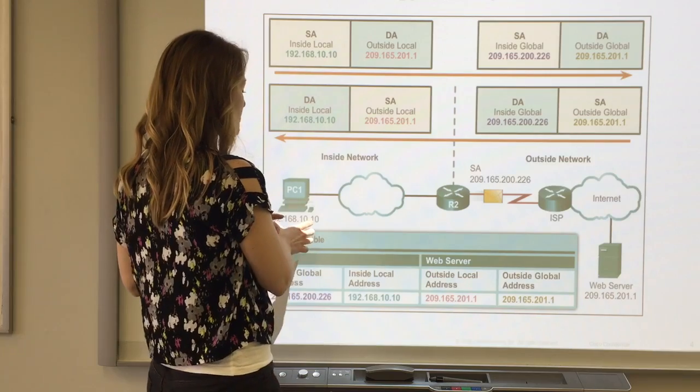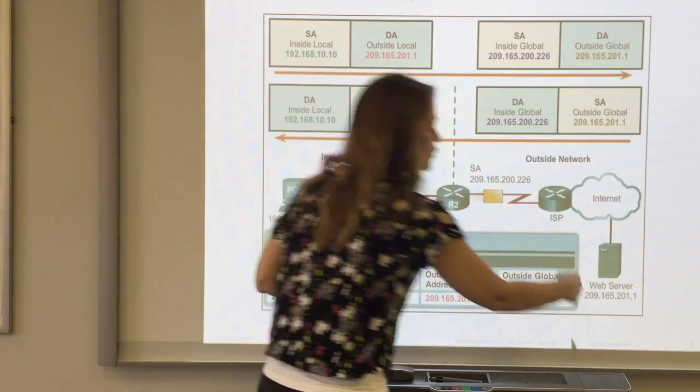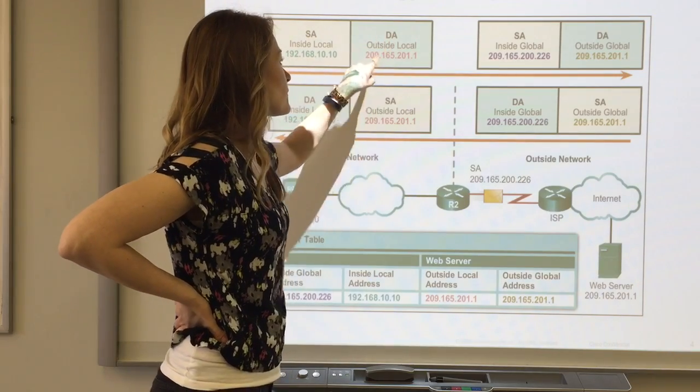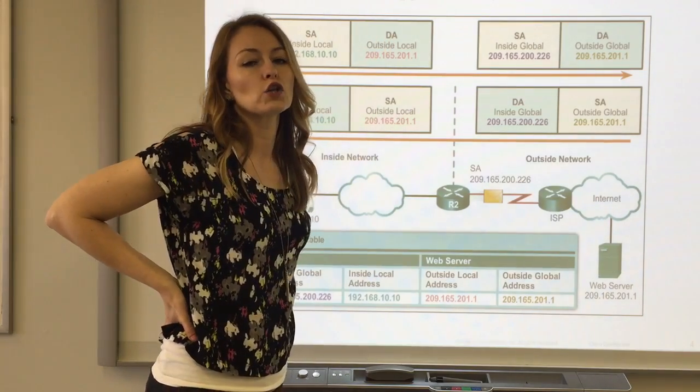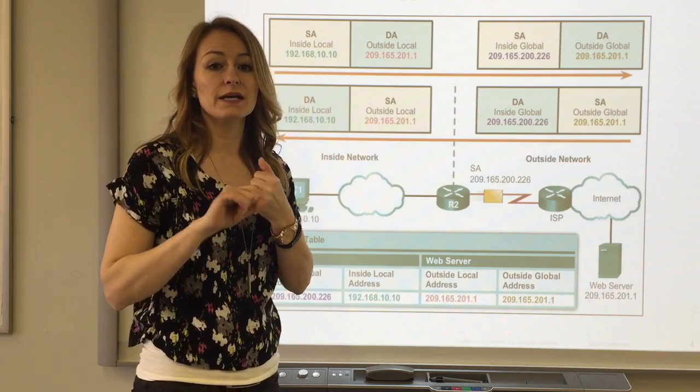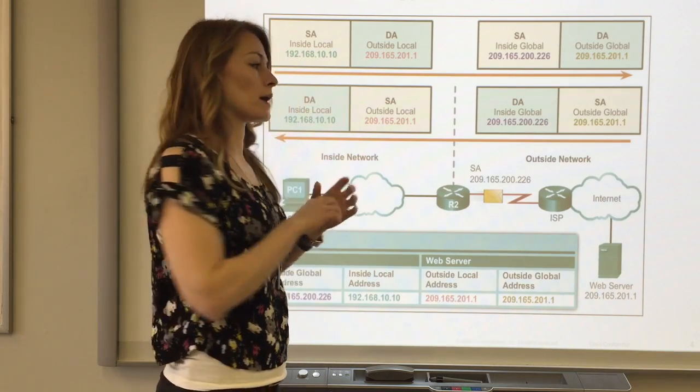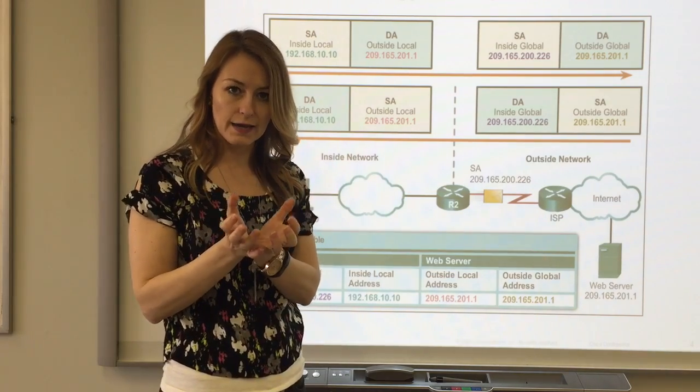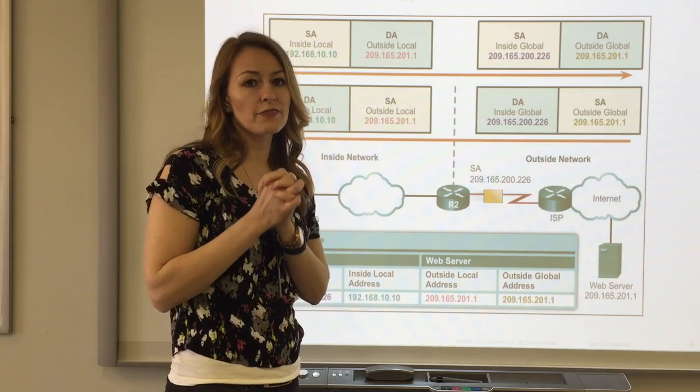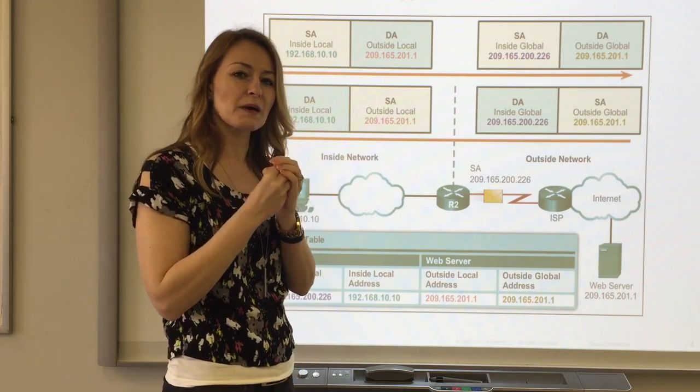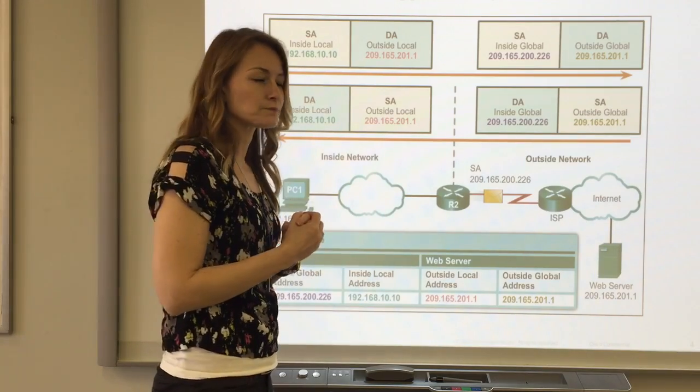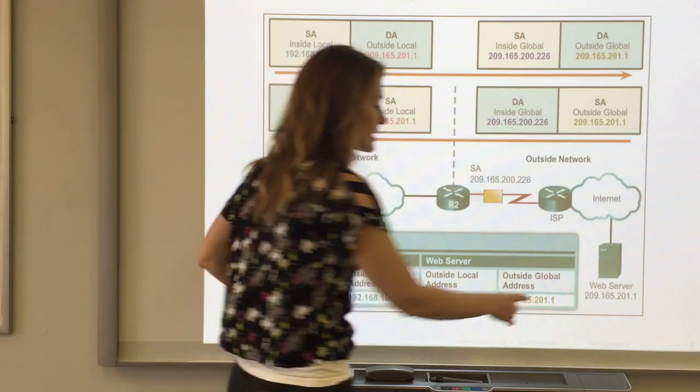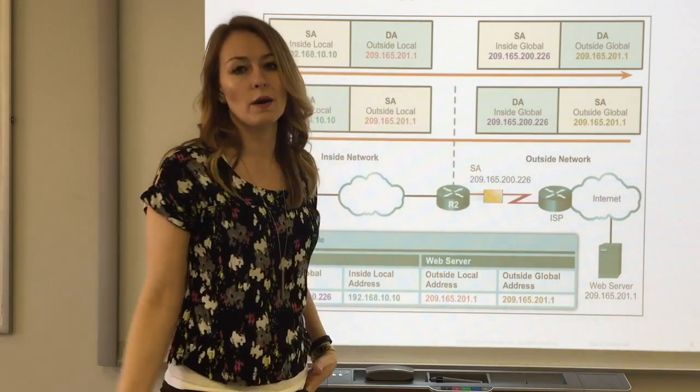Now that packet is destined for something in the outside world. The destination address is the outside local address. It's outside because the packet is going outside the current LAN, and it's local because it's from the perspective of within the LAN. The outside local address is the destination address, 209.165.201.1.